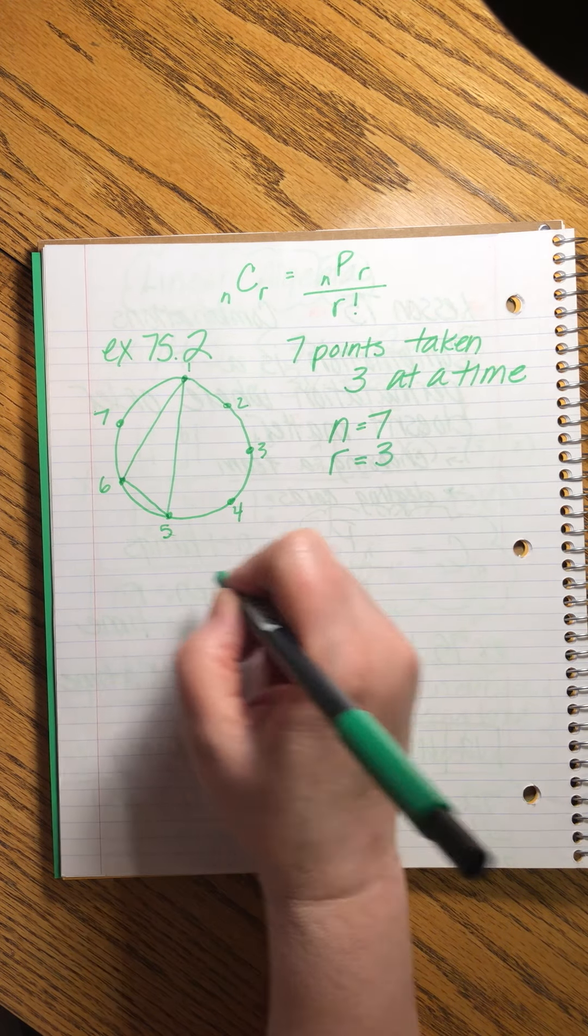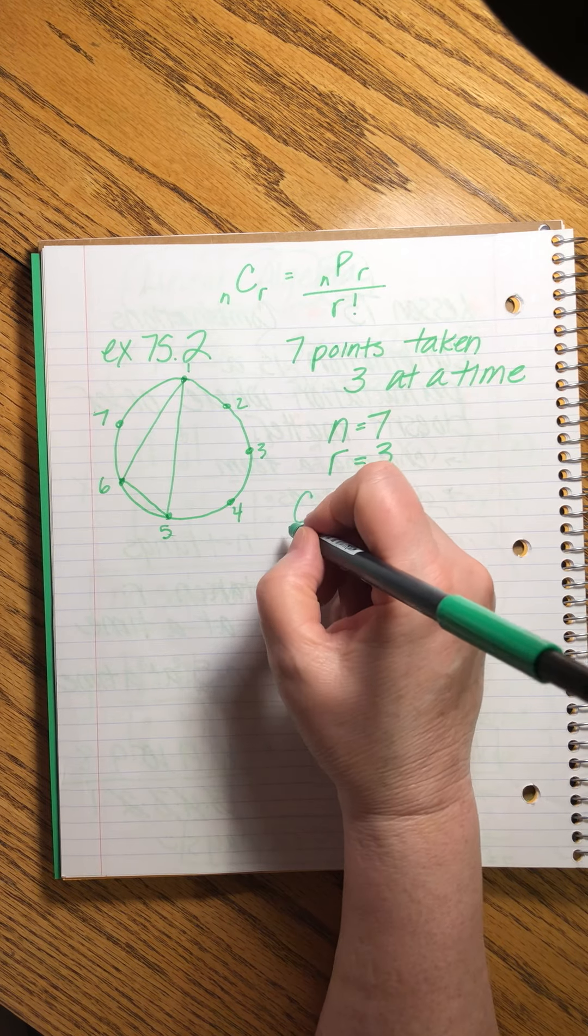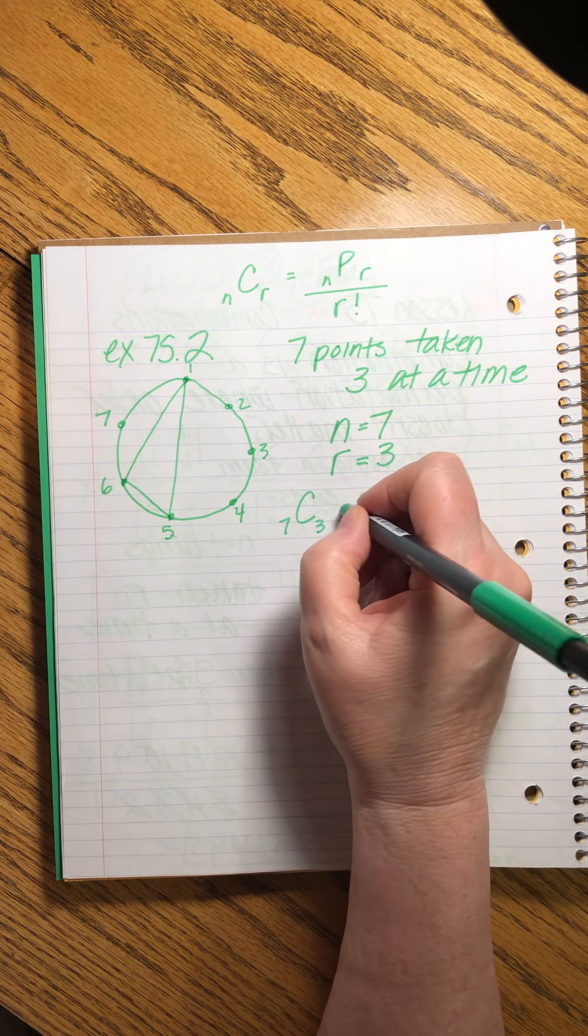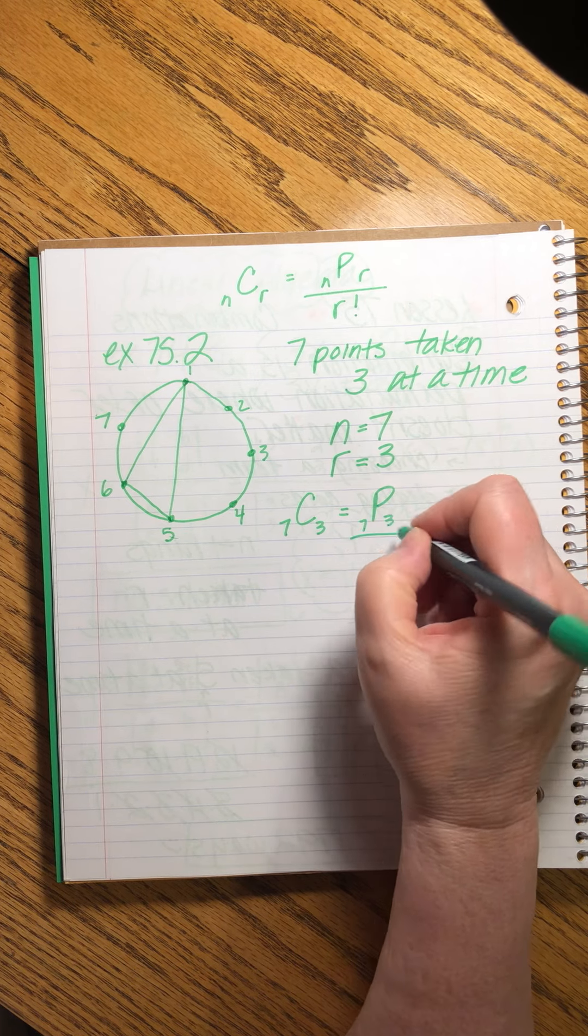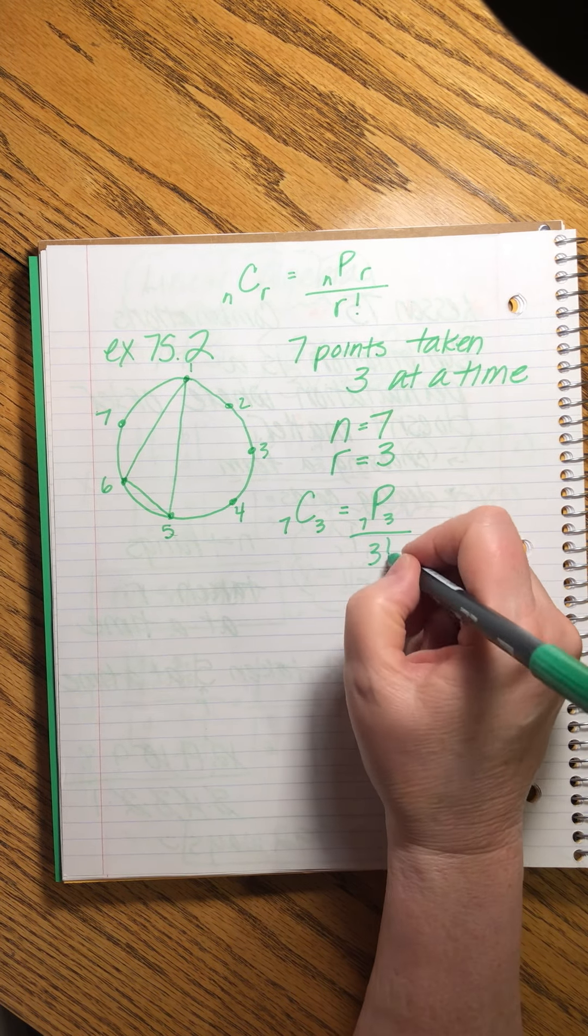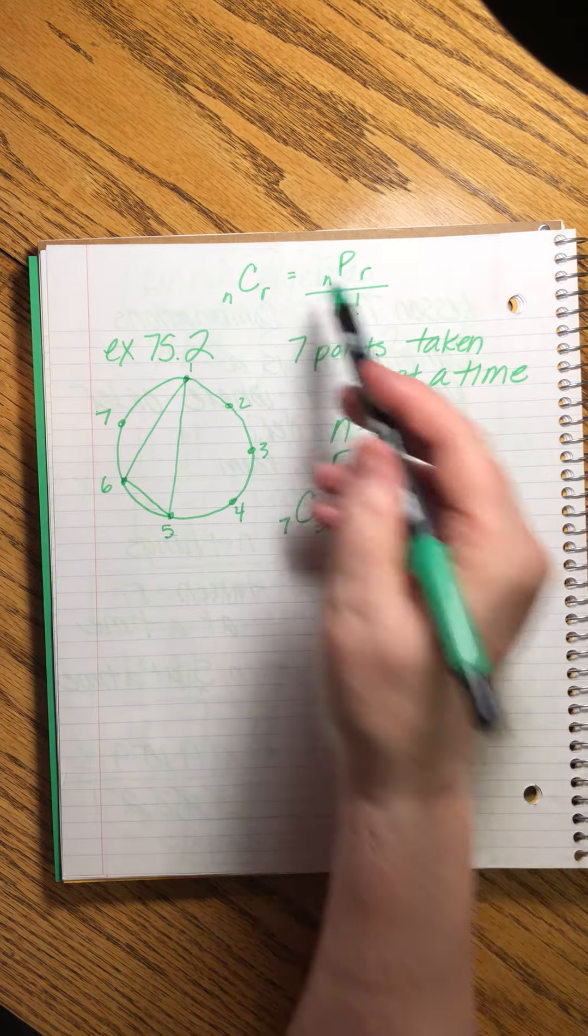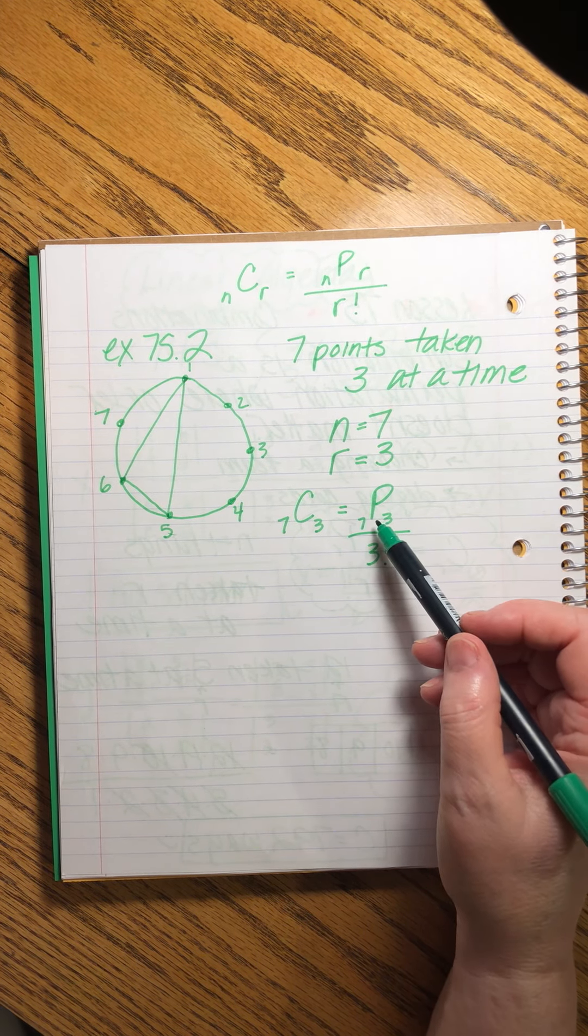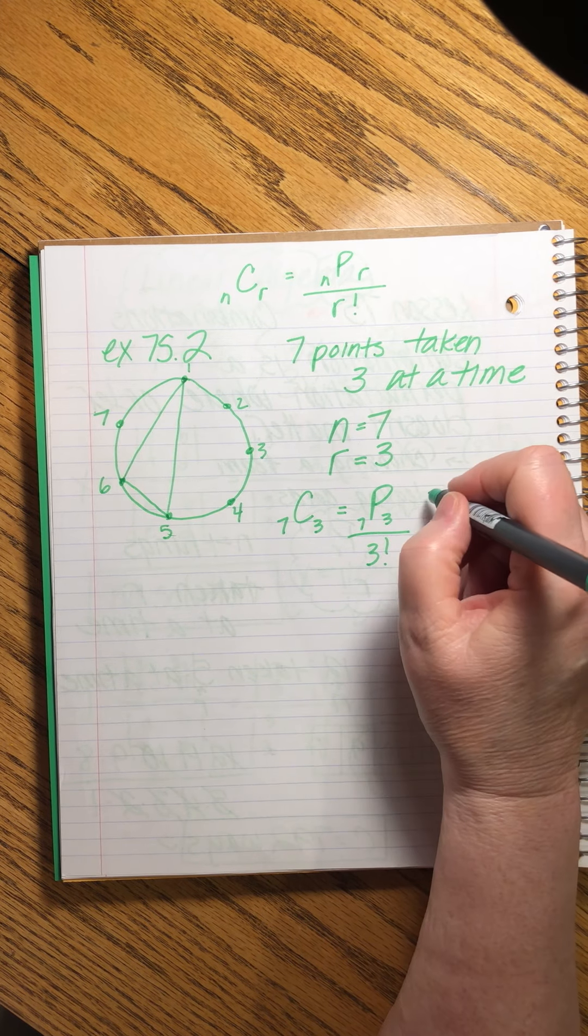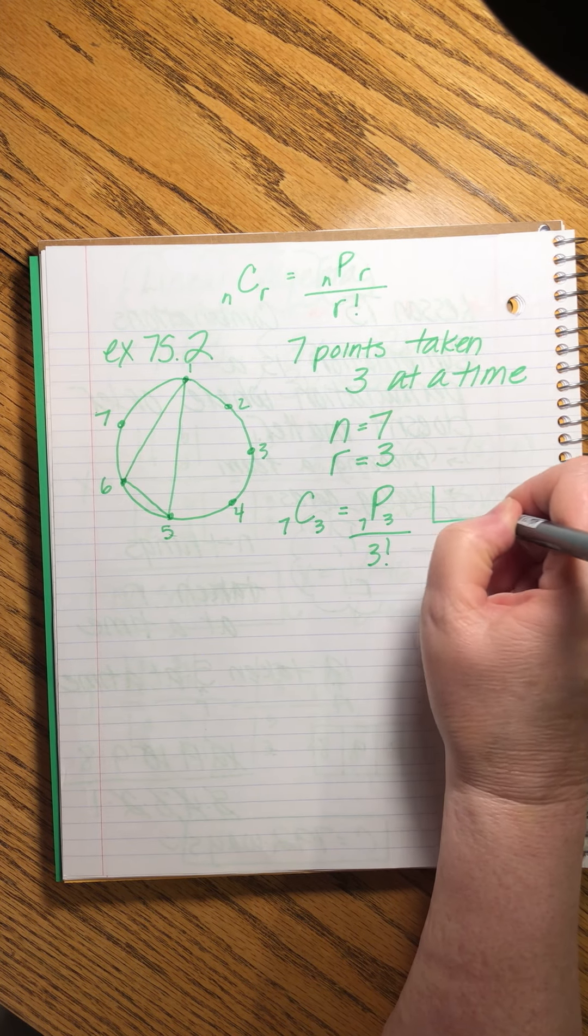So that means our n equals 7 and our r value equals 3. So the combination of seven things taken three at a time equals the permutation of seven things three at a time divided by three factorial. That's our formula. Now we have to figure out this. Seven things taken three at a time.